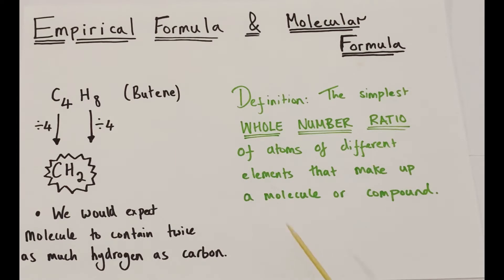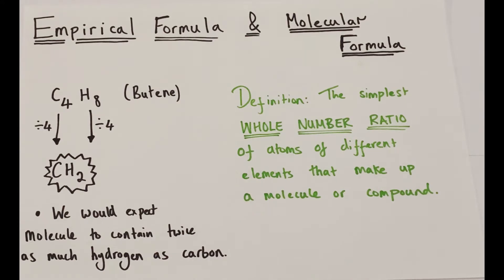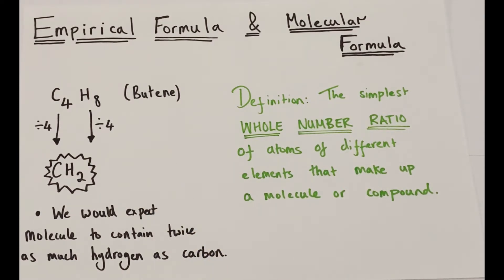The first question to consider is: what is an empirical formula? Using butene with the formula C4H8 as an example — rather than stating the exact formula, we ask: what proportion of hydrogen relative to carbon would we expect, expressed as a simple whole number ratio? That is the empirical formula. Dividing both 4 and 8 by 4 gives CH2, telling us there is twice as much hydrogen as carbon in butene.